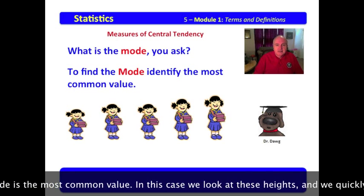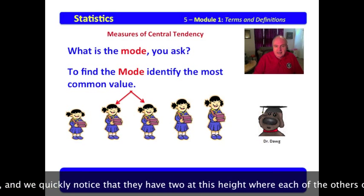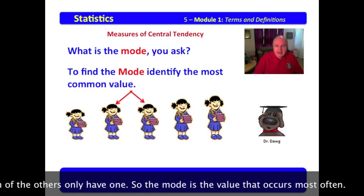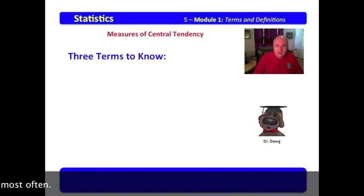In this case, we look at these heights, and we quickly notice that they have two at this height, where each of the others only have one. So the mode is the value that occurs most often.